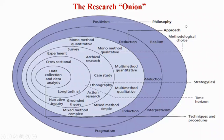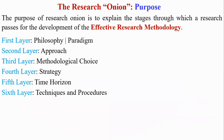In this video, I will talk about Research Onion. This is developed by Saunders. The main purpose of Research Onion is to explain the stages through which a researcher passes for the development of the effective research methodology.